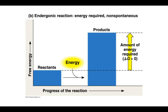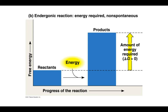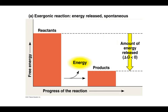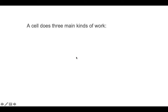An endergonic reaction is going to be the exact opposite. Instead of energy being released like in the exergonic reaction — which is a lot like an exothermic reaction from chemistry — here, kind of like an endothermic reaction, you have to put some energy in. It's not spontaneous; it's not going to do it by itself. So here I have reactants that are low in energy and products that are high in energy. In order to make up that difference, I have to add energy into the system.